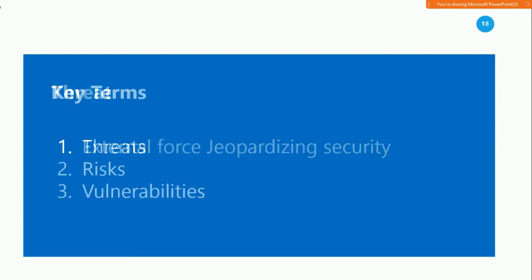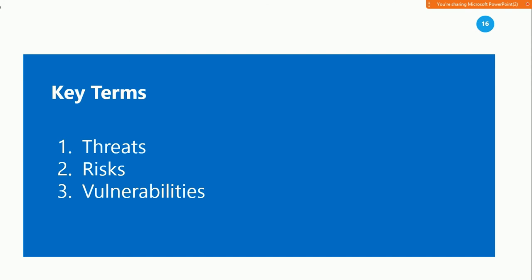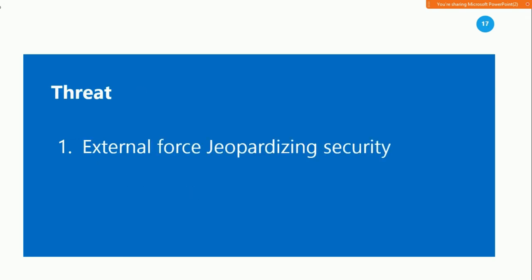We need to have a common language around risk. In everyday life, people often use the terms threat, risk, and vulnerability interchangeably, but they are actually three different concepts. A threat is some external force that jeopardizes the security of your information and systems. Threats might be naturally occurring, such as hurricanes and wildfires, or man-made, such as hacking and terrorism. You cannot normally control what threats are out there — they exist independently.